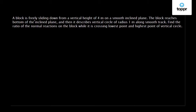The question is: a block is freely sliding down from a vertical height of 4 meters on a smooth inclined plane. The block reaches the bottom of the inclined plane and then describes a vertical circle of radius 1 meter along a smooth track. Find the ratio of the normal reactions on the block while it is crossing the lowest point and the highest point of the vertical circle.